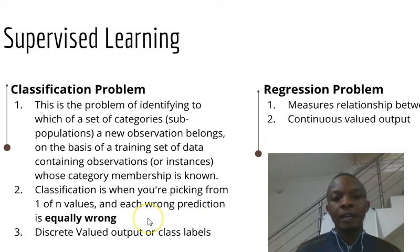There are some tips to know which problem is classification or regression. The first tip is classification is when you're picking from one of n values and each wrong prediction is equally wrong.